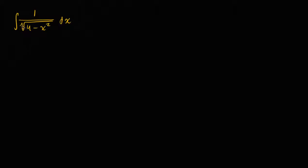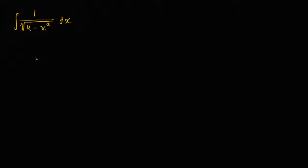An insight that you might have is that this square root of four minus x squared looks like something you might get from the Pythagorean theorem — specifically when solving for a non-hypotenuse side. If the hypotenuse is two, that's two squared, and if the other side is x, then two squared minus x squared gives the length of the remaining side. Let's just run with that.